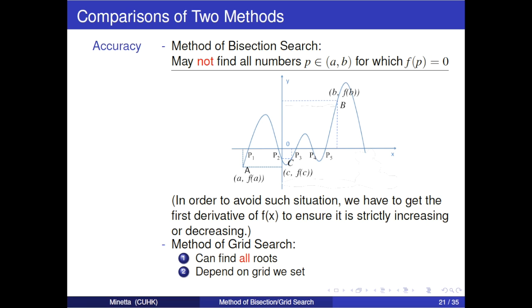Following is the comparisons of two methods. For accuracy, method of bisection search may not find all numbers p in interval [a, b] for which f(p) equals 0. We explain it using this picture. Looking at this f(x) curve, at point a, f(a) is less than 0, where at point b, f(b) is larger than 0. For the midpoint of interval [a, b], the function value of c is less than 0, which means that the next procedure will continue in the interval [c, b]. And we cannot find p1 and p2 these two roots.